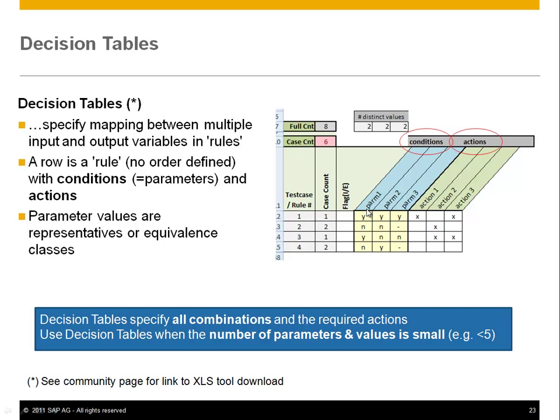Now, these decision tables obviously specify all combinations and the required actions for those parameters. This implies that you can use decision tables only when the number of parameters and values is relatively small. For instance, when you have five parameters, when it gets too big, the resulting test case planning becomes exhaustive testing, which is basically impossible. But still, it's a good way to cover small cases of interconnected parameters, and sometimes even useful as a specification tool.